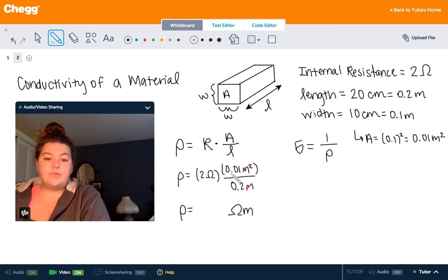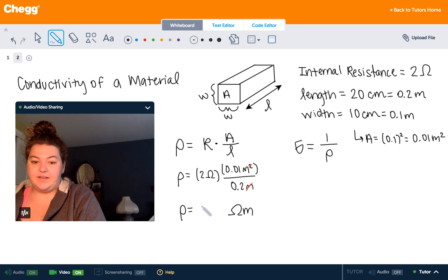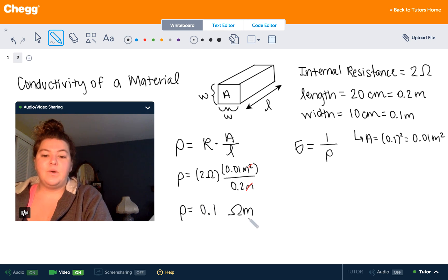And two times 0.01 is 0.02. 0.02 divided by 0.2 is simply 0.1, or one-tenth ohm meters.